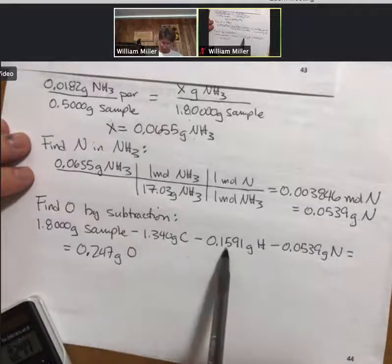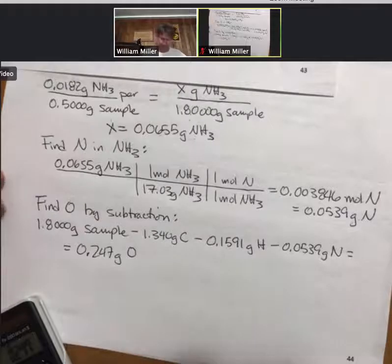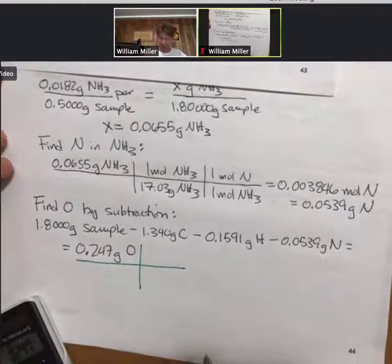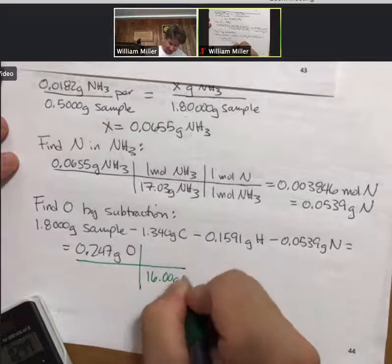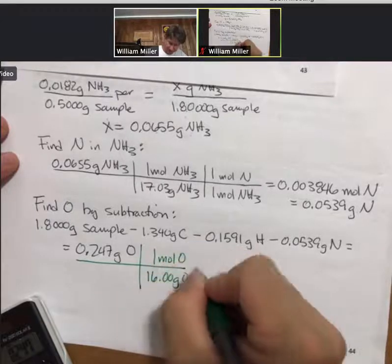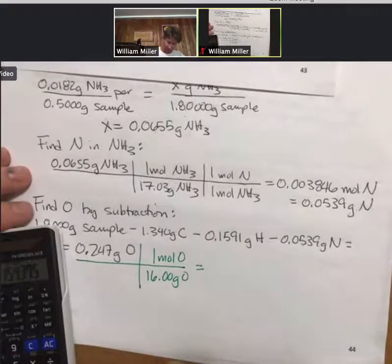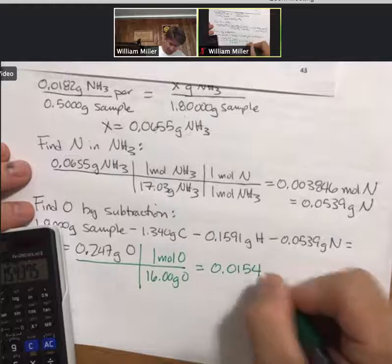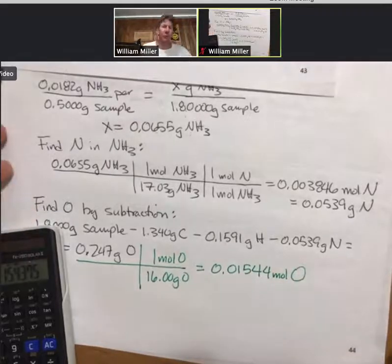1.3, 0.4, 0.5, 0.55. Yeah, that makes sense. Find our moles of oxygen, then we'll be able to gather everything up. 0.01544 moles of oxygen.